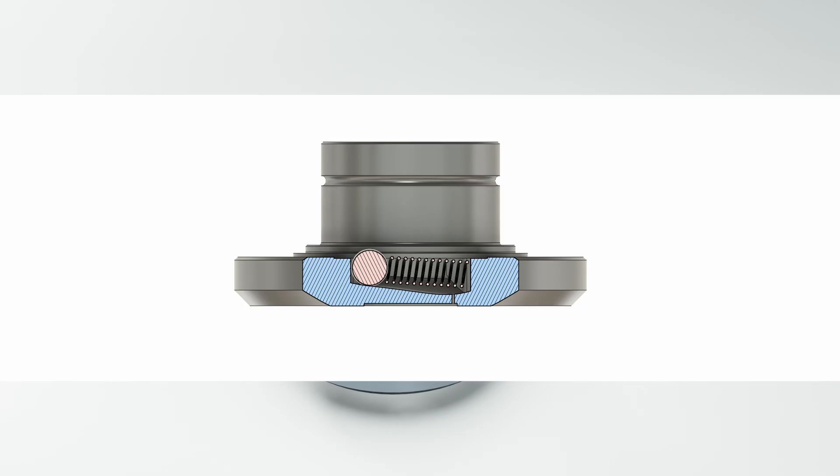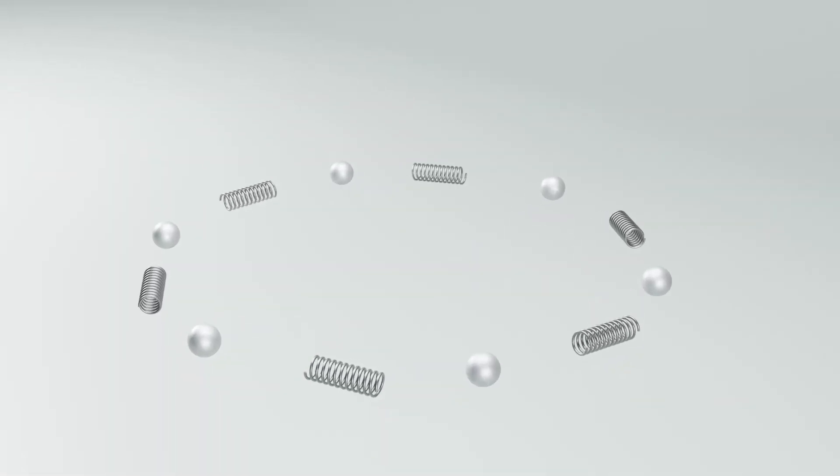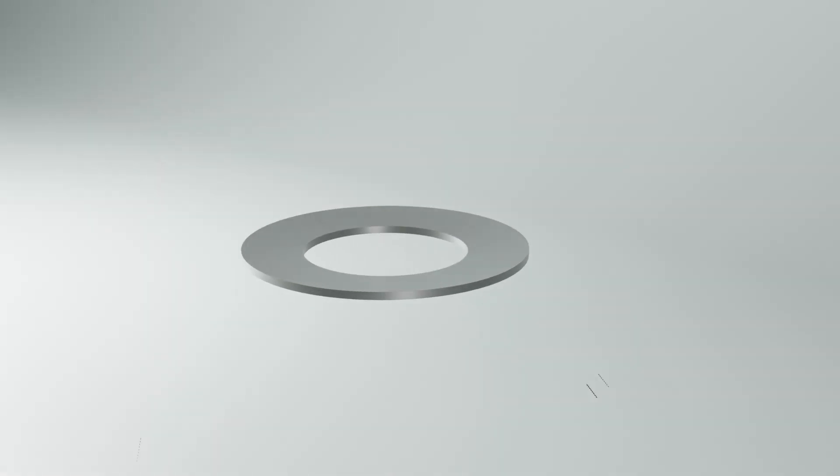Notice the section view of the inclined track. These are the springs and steel balls that move inside the inclined tracks. Here we have the disc spring, also known as bellyville spring.